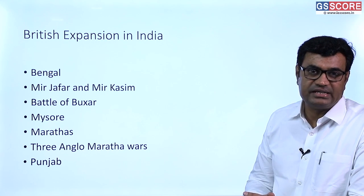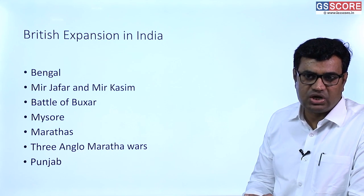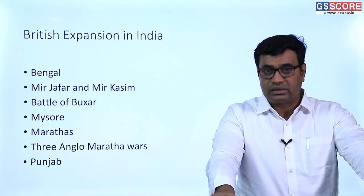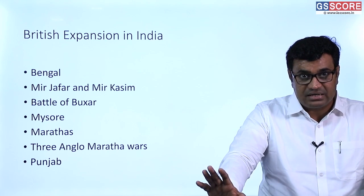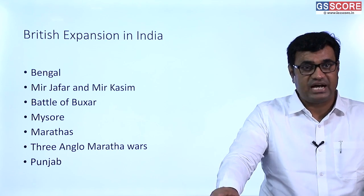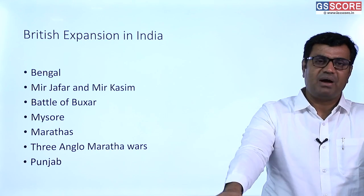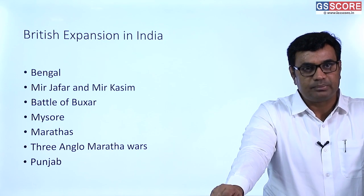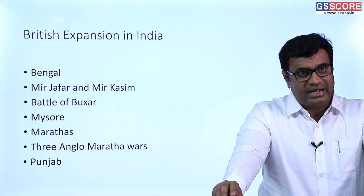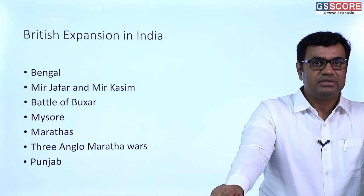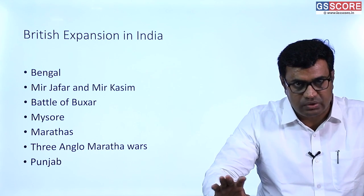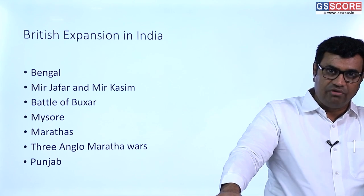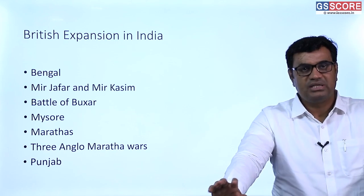After the Marathas, the British decided to control Punjab, ruled effectively by Maharaja Ranjit Singh in the early 19th century. British respected Maharaja Ranjit Singh and signed the Treaty of Amritsar with him. But after his death in 1839, weak successors began to rule Punjab. British were then compelled to conquer Punjab through two Anglo-Sikh Wars fought in the mid-19th century. Punjab was ultimately annexed under the leadership of Lord Dalhousie, the Governor General of British India.